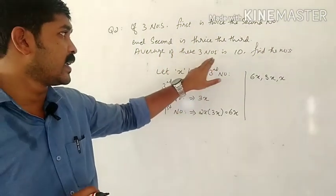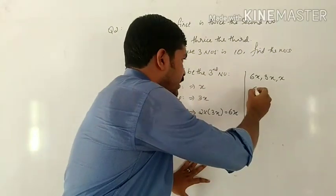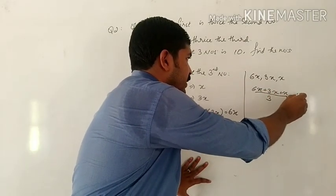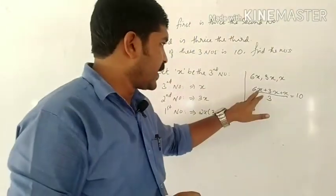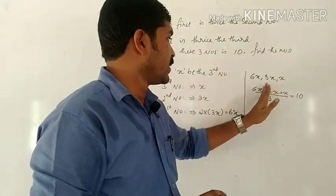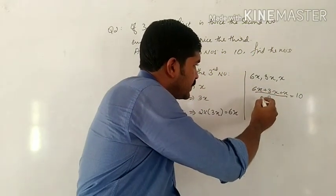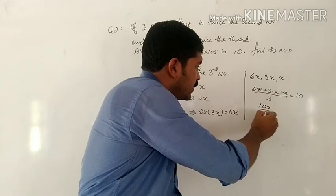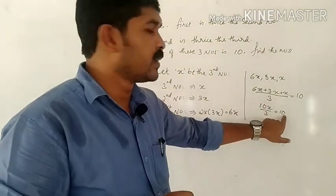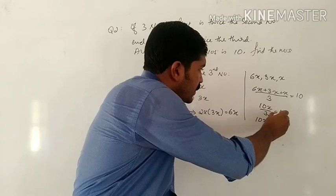The average of these 3 numbers is 10. So 6x plus 3x plus x divided by 3 equals 10. The coefficients of x are 6, 3, and 1. Adding them: 6x plus 3x plus x equals 10x. So 10x divided by 3 equals 10, which means 10x equals 3 times 10, giving x equals 3.